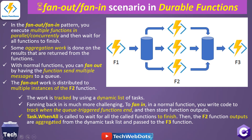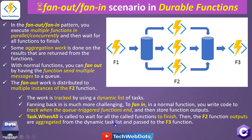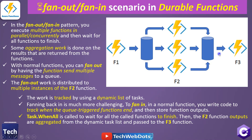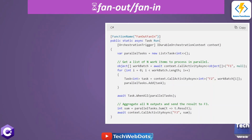Task.WhenAll is called to wait for all the called functions to finish. Once all three function instances complete, the f2 outputs are aggregated from the dynamic task list and passed to the f3 function. All three will be processed, aggregated, and then passed to f3. It is one of the simplest patterns of durable functions.